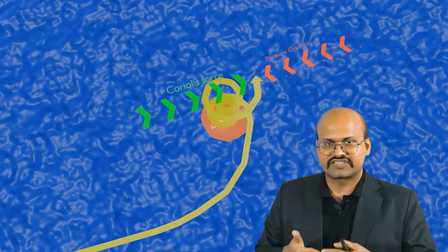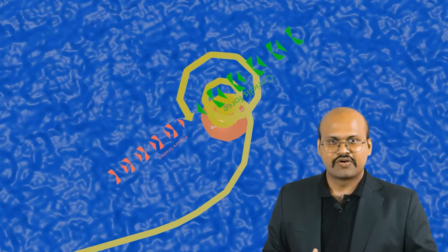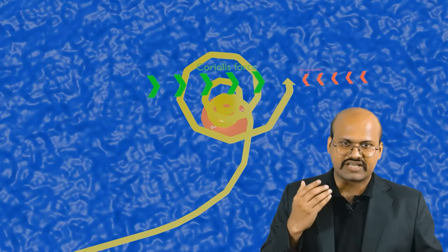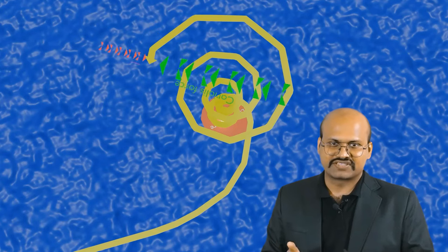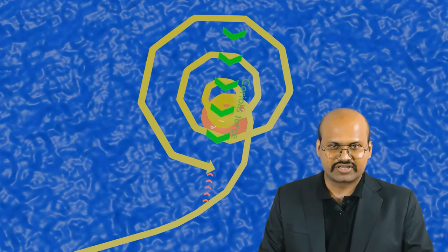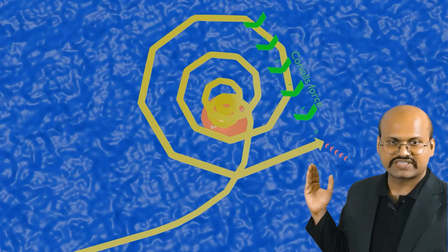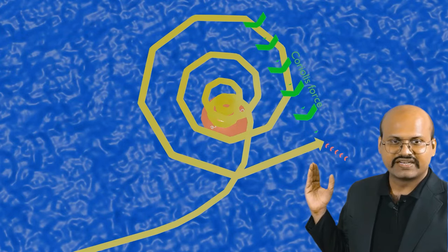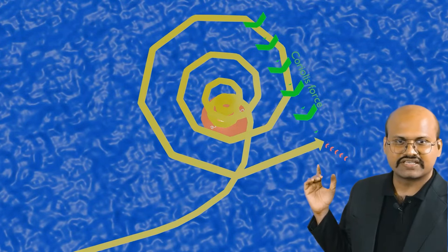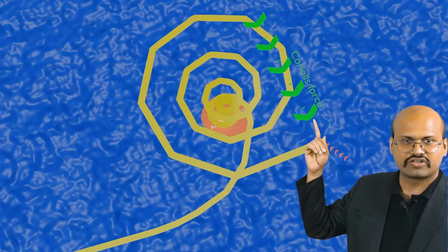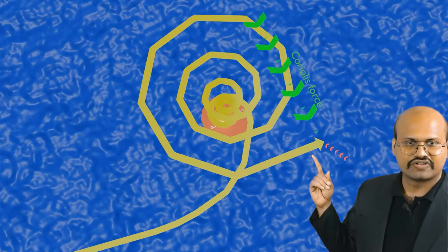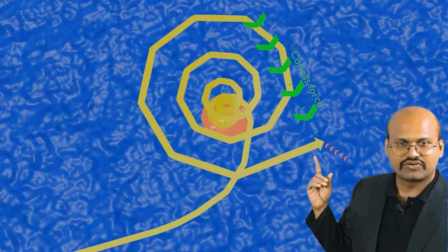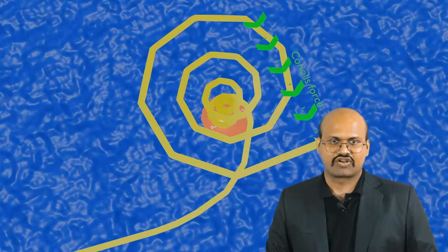As the wind system rises, the pressure gradient decreases because the low pressure system exists only at the ground — there is no low pressure system at higher altitudes. Therefore the wind now moves outward; since wind velocity is higher, the Coriolis force dominates and causes the wind to move outside of the cyclone at upper levels.